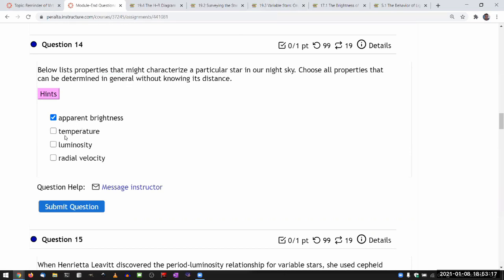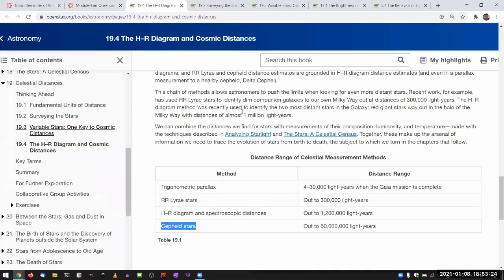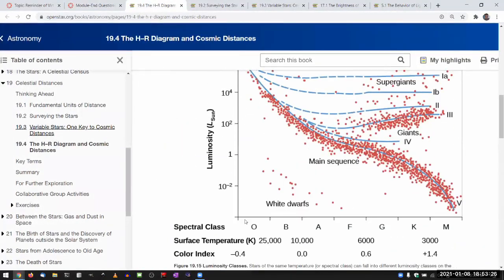And temperature is something you can figure out from the HR diagram. In fact, in the HR diagram, the horizontal axis part is the temperature. And that just comes from the spectral class, the absorption spectra.